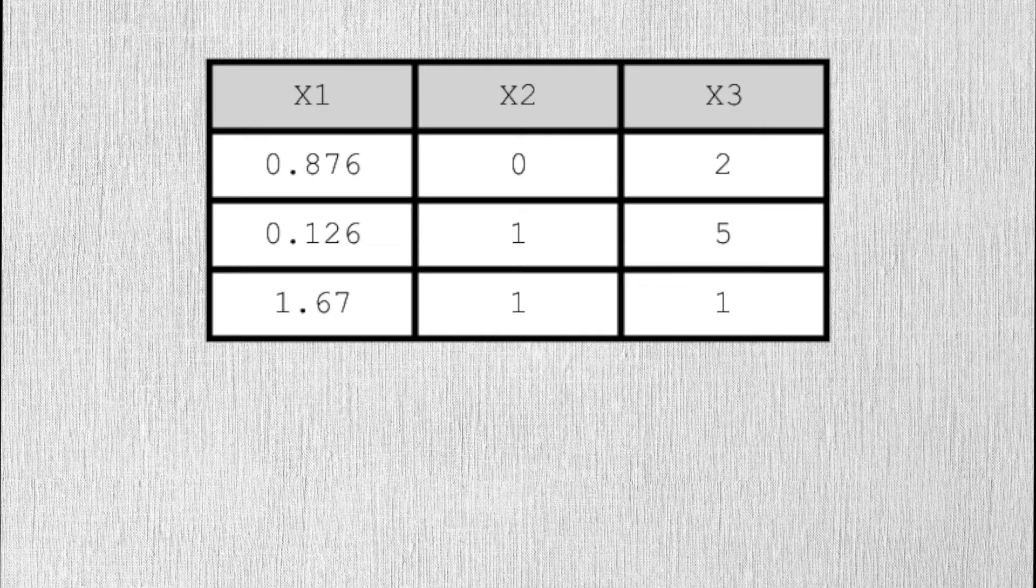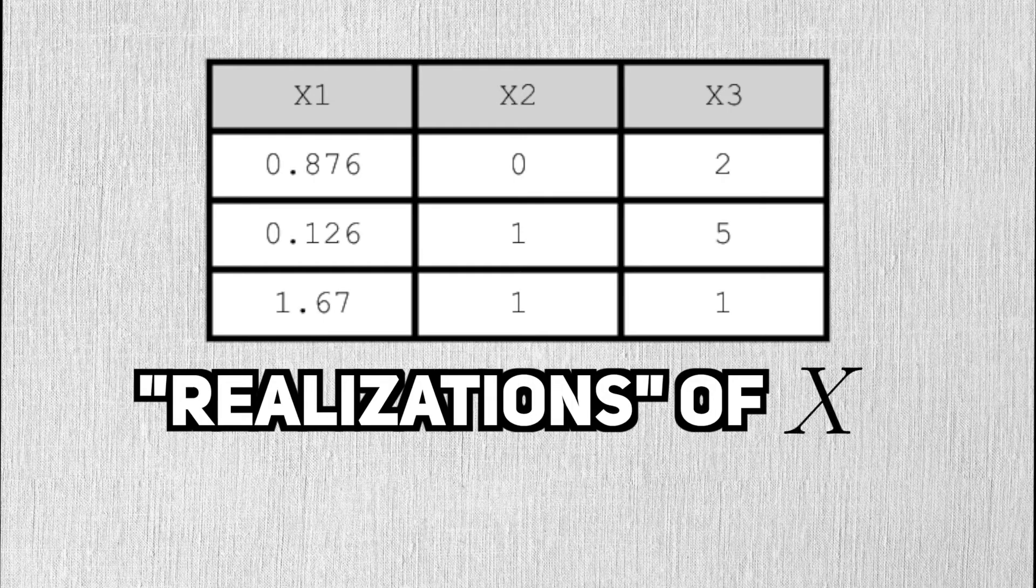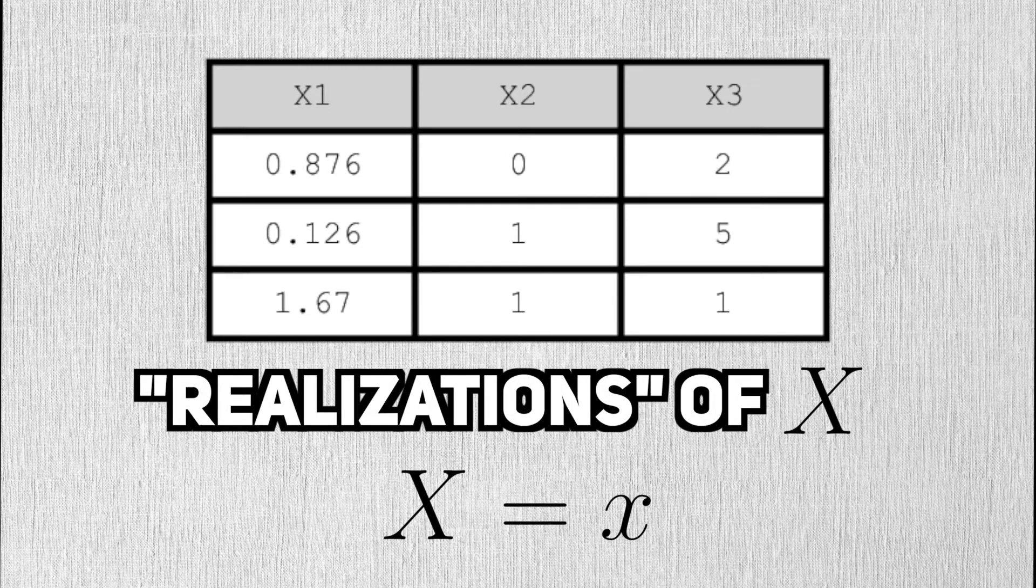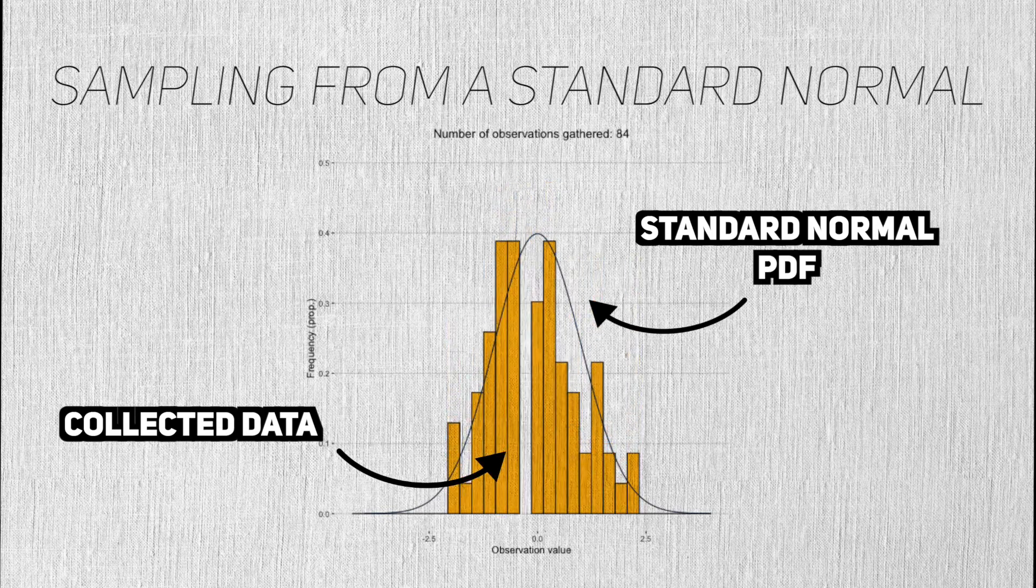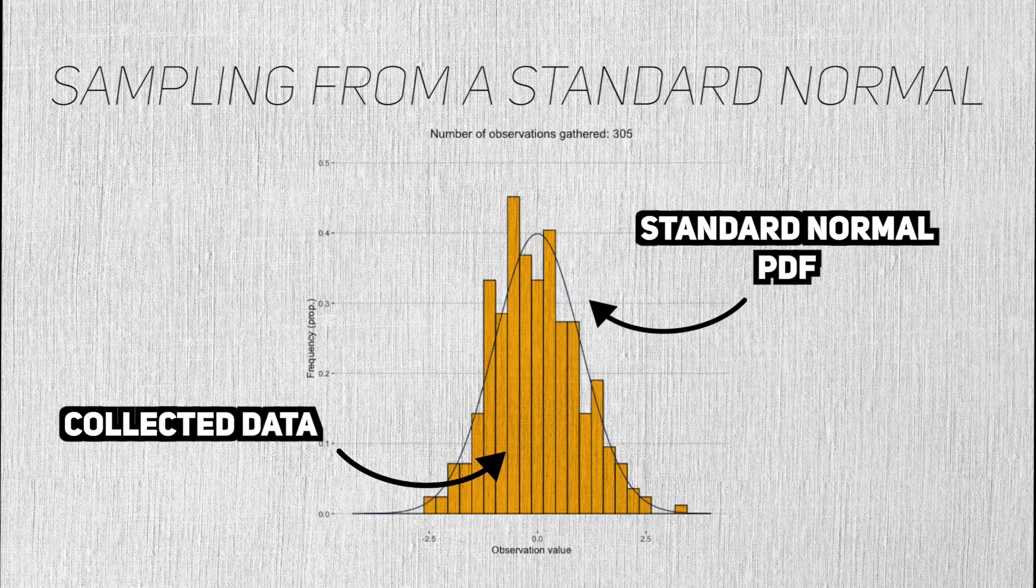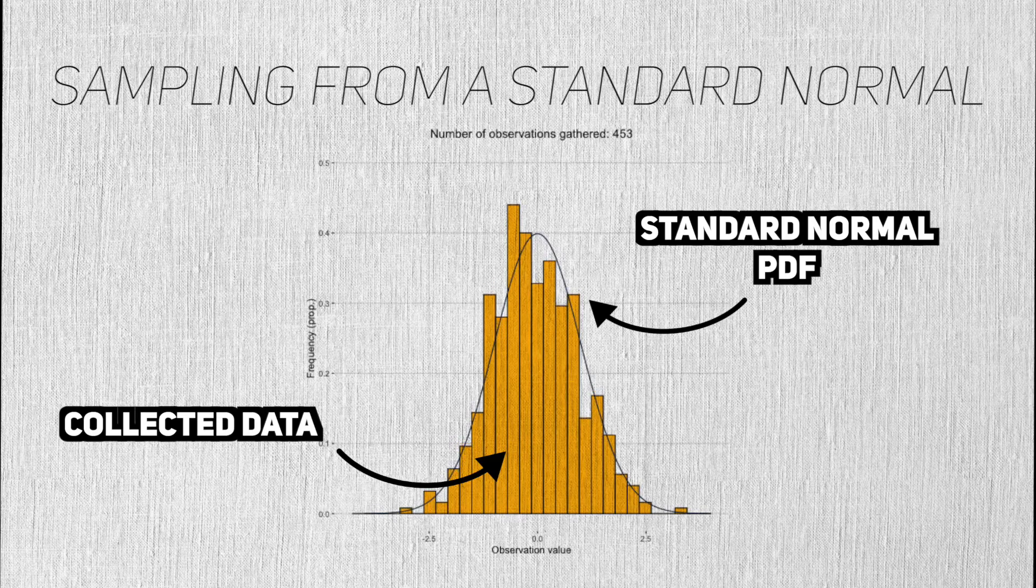Where would we see random variables? When we collect data, we are collecting realizations of a random variable, usually denoted with the lowercase letter. If we collect many observations and observe their histogram, it will start to resemble the PDF that they come from.